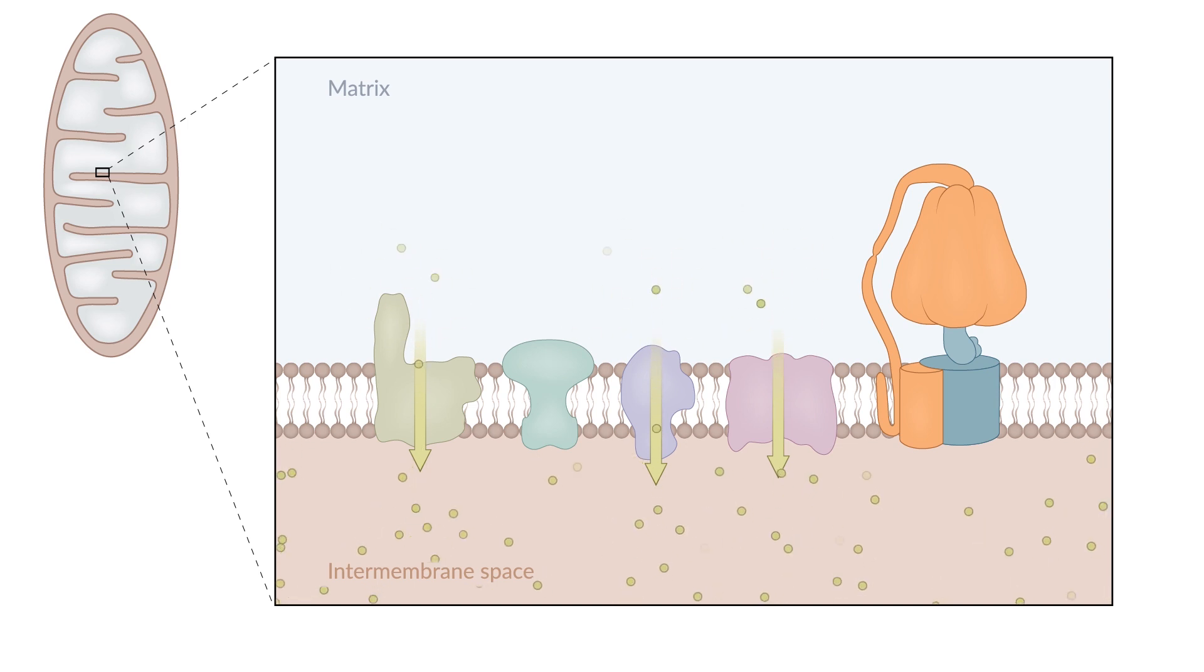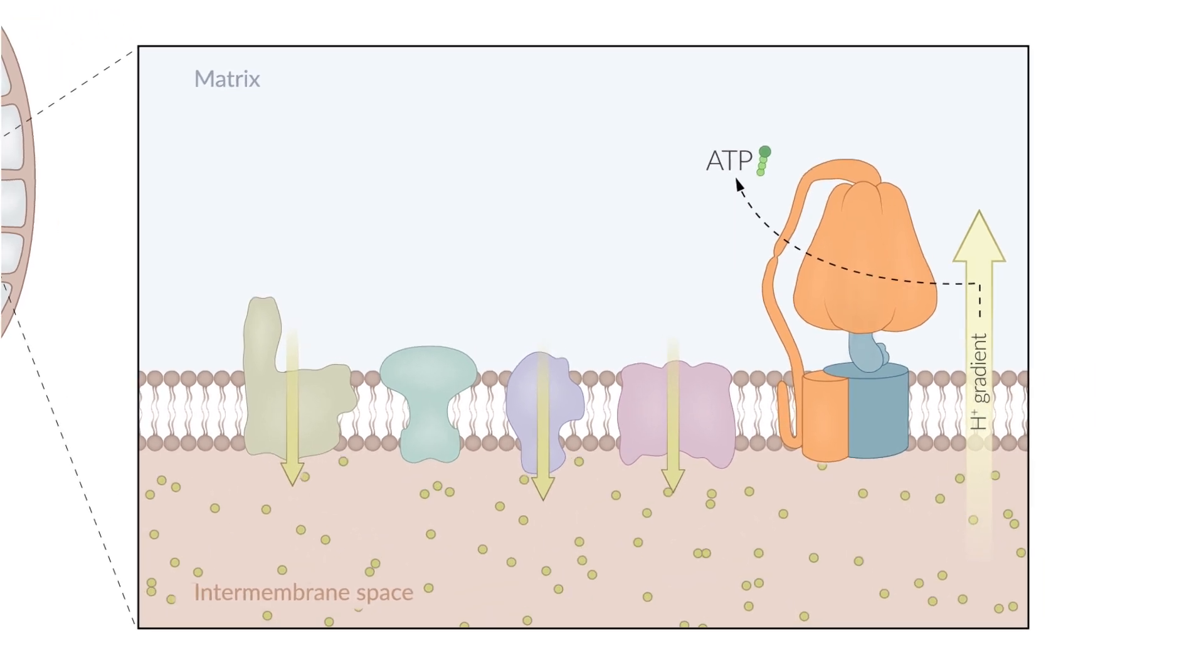For this energy to be used universally, it needs to be converted into chemical energy, in this case ATP. The conversion of energy stored in the proton gradient to ATP is mediated by ATP synthase.